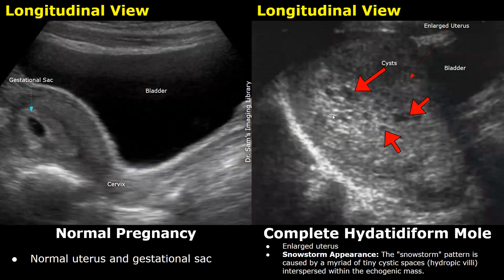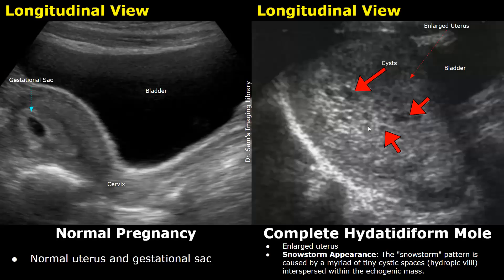This is a transabdominal image in longitudinal plane showing a normal uterus with a normal gestational sac. The uterus is normal in size. In contrast, in gestational trophoblastic disease, the uterus is enlarged and there is no normal gestational sac or embryo. Instead, there is an echogenic mass with multiple cystic spaces in the uterine cavity.